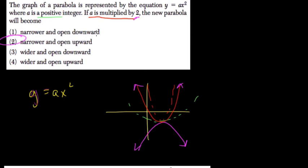Now opening downward would be if, let's say, you're multiplying by negative 2. Wider and opening downward would be multiplying by, let's say, negative 1 half, some fraction between 0 and 1. And wider and opening upward would be multiplying by positive 1 half.